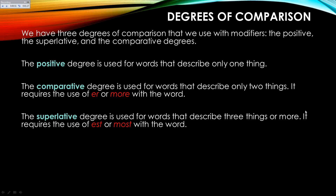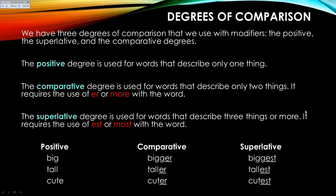The third degree is called the superlative degree, and that's when we have three things or more that we are comparing. So to recap: the positive degree is used for just one thing; the comparative degree is when you're comparing two things; and the superlative degree is for comparing three or more things.